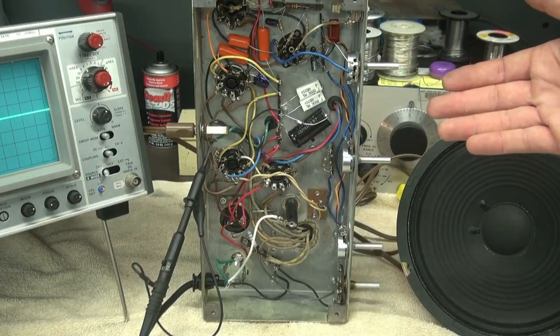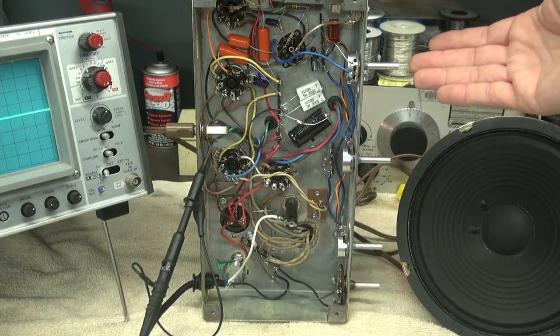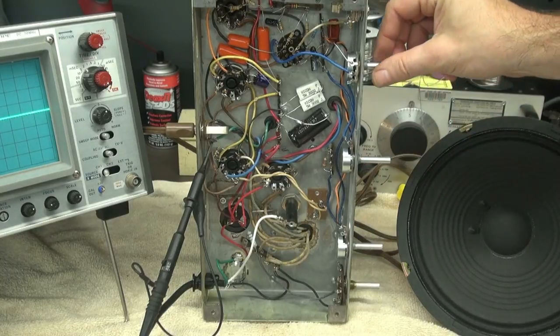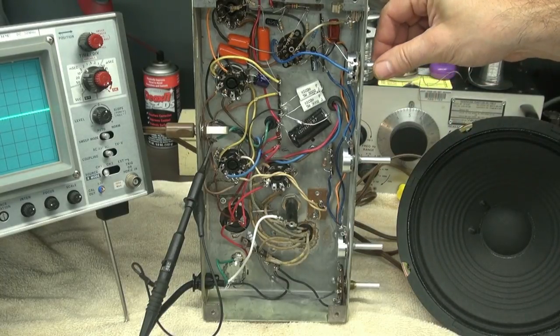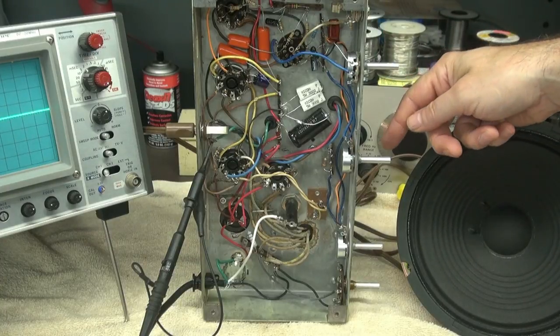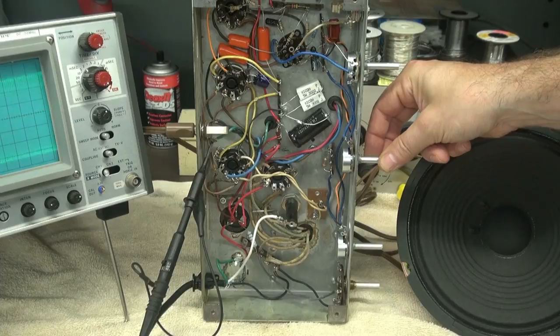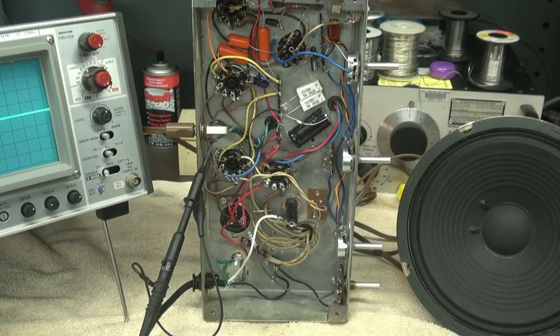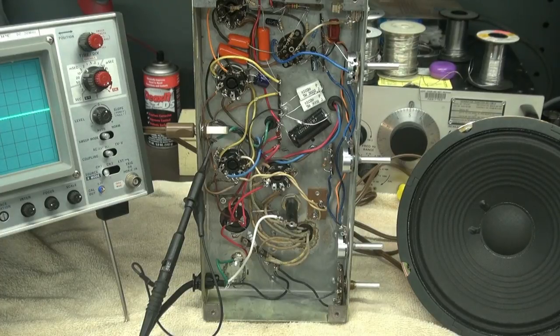Now if you have this problem with your amp you might think, well maybe I've got a bad volume pot. But watch this: if I turn my treble back and I bring my volume all the way up, it doesn't do it. Now I'll advance the treble. There it goes. So you may think, what the heck's going on with that amp? Well let me show you using the oscilloscope.